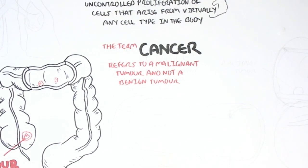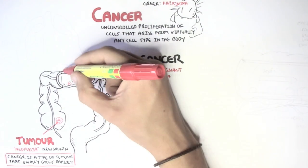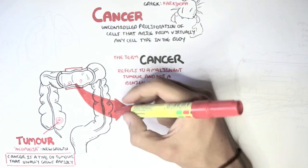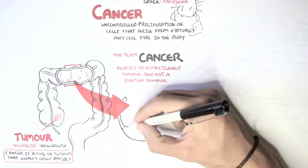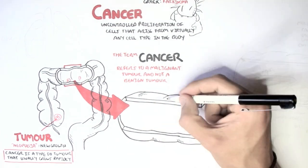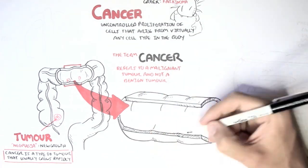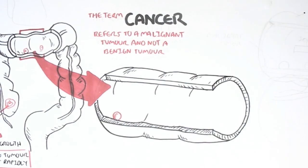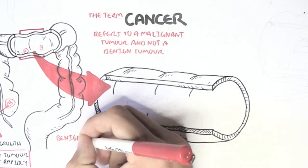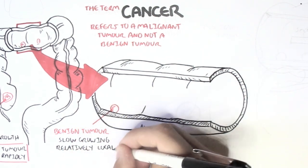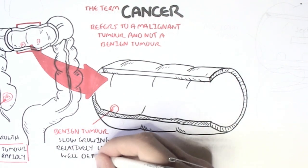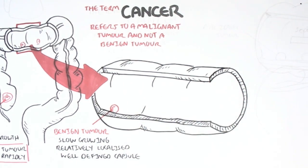What is the difference between a malignant tumor and a benign one? Let's have a closer look at the colon tumors here. This tumor here will represent a benign tumor. A benign tumor is slow growing. It is relatively localized and has a well-defined capsule, so it doesn't really break off — it stays there.